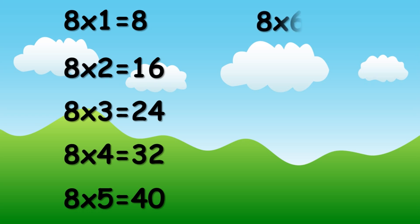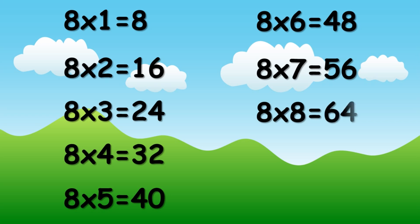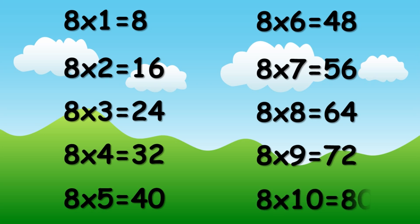Eight sixes are forty-eight. Eight sevens are fifty-six. Eight eights are sixty-four. Eight nines are seventy-two. Eight tens are eighty.